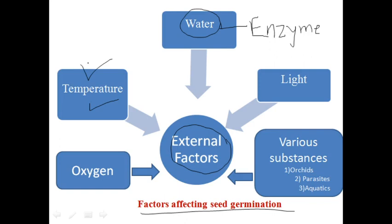While some species germinate well at constant temperature, others require or at least have germination promoted by daily alternation in temperature — for example, Oenothera or Rumex. Freshly harvested seeds of some crops like barley, oats and wheat exhibit rapid germination between 12 to 16 degrees Celsius. Even after drying at ordinary temperatures for a period of several weeks, germination occurs between 20 to 30 degrees Celsius in some seeds.